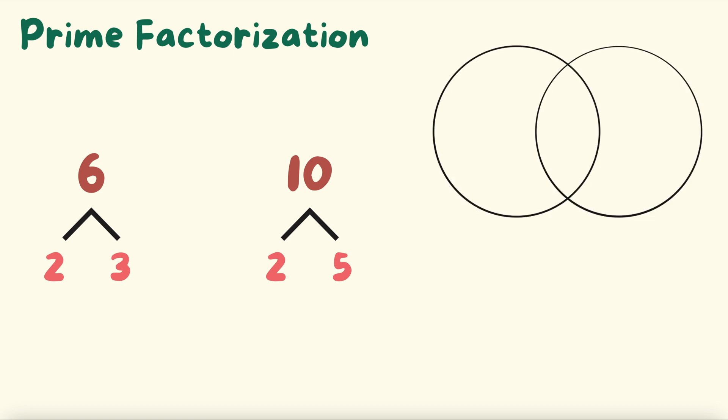Then we're going to draw our Venn diagram. This compares things that are similar and different. Put your numbers on top so you know which side is which and then we're going to distribute the numbers into the Venn diagram. Let's cross off our 2's because they share a 2 so I'm going to stick a 2 right in the middle of my Venn diagram. Then we have a 3 left so I'm going to put the 3 on the 6 side and we have a 5 left so I'm going to put the 5 on the 10 side. Everybody following?